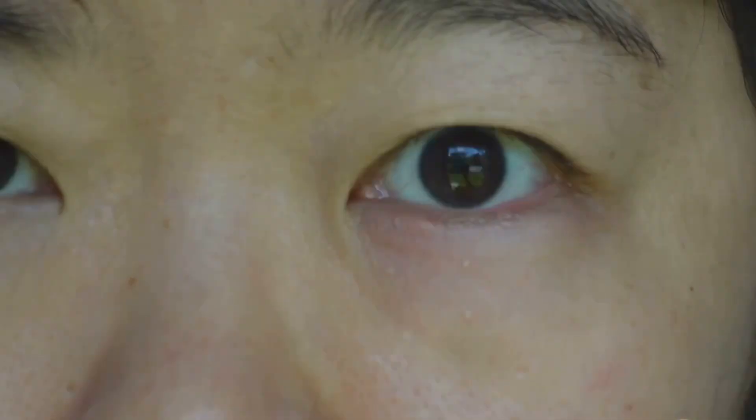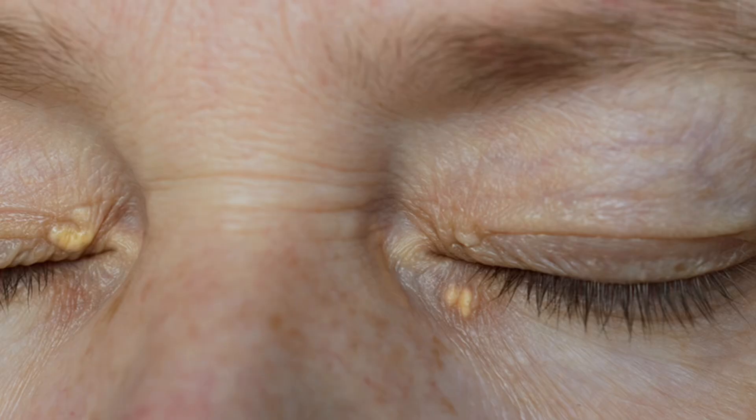Xanthalasma. It's a mouthful, isn't it? But don't let the name scare you. These are small yellowish bumps or growths you usually find around your eyelids. They're soft to the touch and painless. Xanthalasma is more common as we age, and while they're harmless, they can be a cosmetic concern for some.